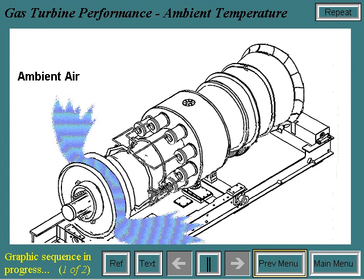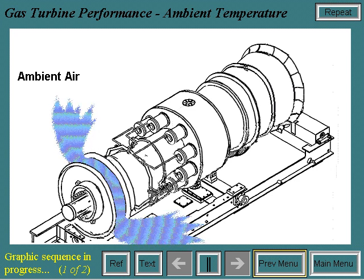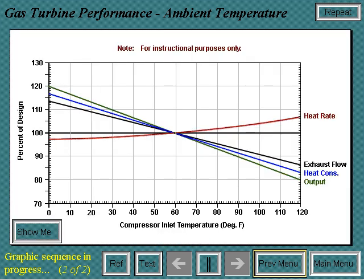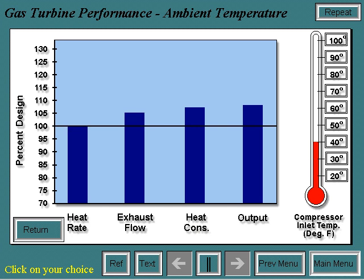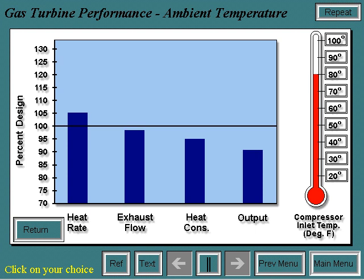Since the gas turbine is an ambient air-breathing machine, its performance will be changed by anything affecting the mass flow of the air intake to the compressor. The most obvious are changes in the reference conditions of 59 degrees Fahrenheit and 14.7 PSIA. Depending on the unit's cycle parameters and component efficiencies, ambient temperature will affect the air mass flow, which in turn will change output, heat consumption, heat rate, and exhaust flow.